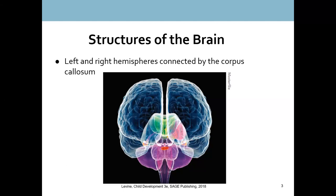The left hemisphere controls and receives input from the right side of the body. So if you move your right arm, it's coming from your left hemisphere. Similarly, if somebody touches your left arm, it's registered in your right hemisphere. All the movement and sensation input crosses over — the left hemisphere controls the right side, the right hemisphere controls the left side. For most people, the left side of the brain is where they have their language center. It's also the side known more for logic. They all start with L — left hemisphere goes with language and logic.